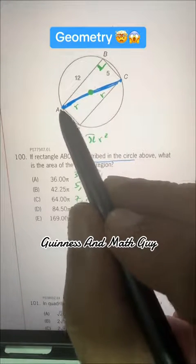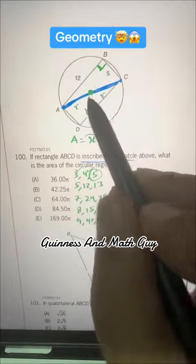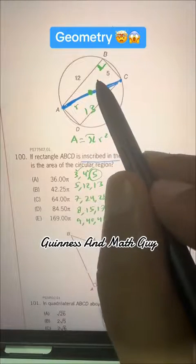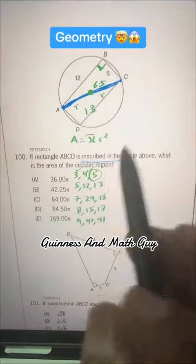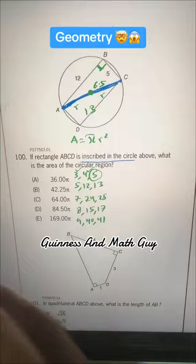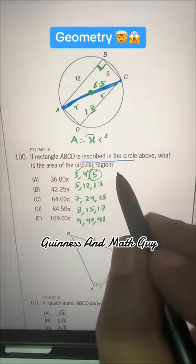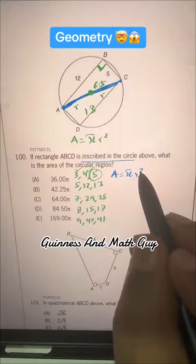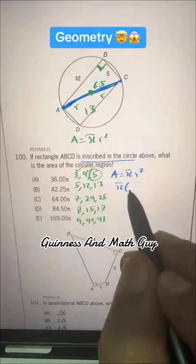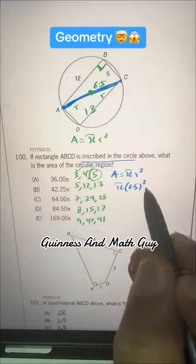This total A to C is 13. It means half of that, the radius, is 6.5. We need area, that is πR². So π times 6.5 squared.